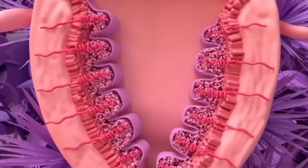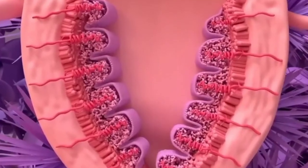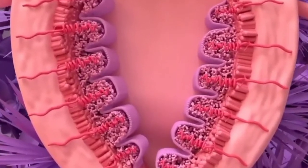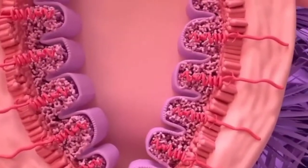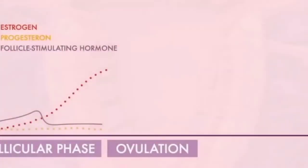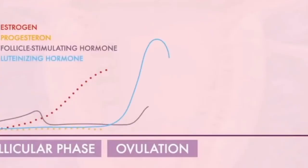The ovulatory phase begins with a rise in luteinizing hormone and follicle-stimulating hormone levels. The surge in luteinizing hormone triggers ovulation, causing one of the most prominent follicles to rupture and release the egg.